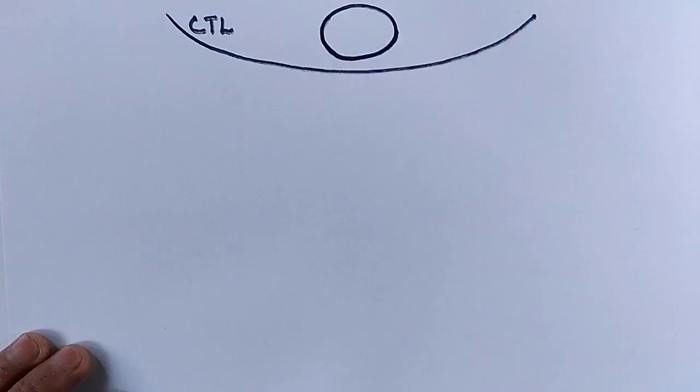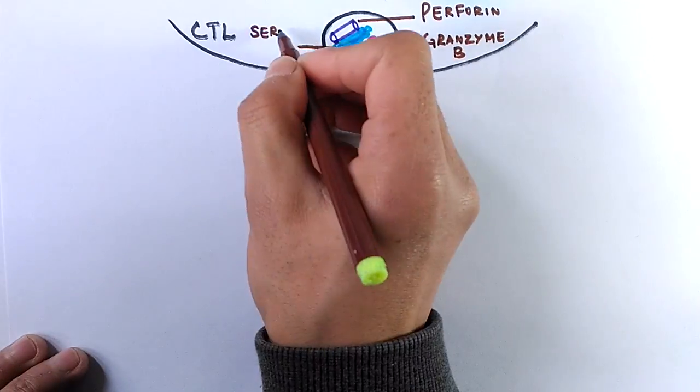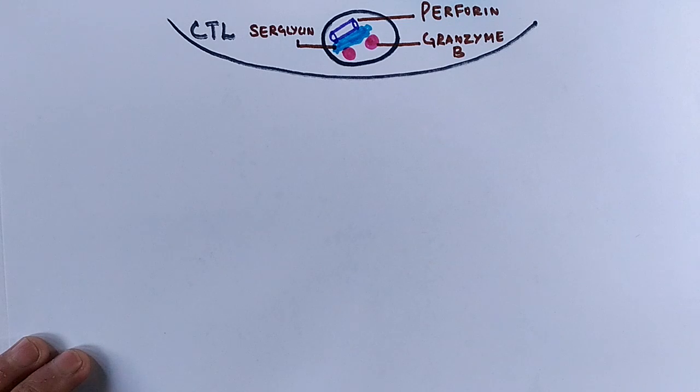We see here we have cytotoxic T cell that has Perforin, Granzyme B, and Seriglysin. Perforin is a pore forming complex. On the other hand, we have Granzyme B, that's an apoptotic signaling molecule which is able to initiate apoptotic signal.